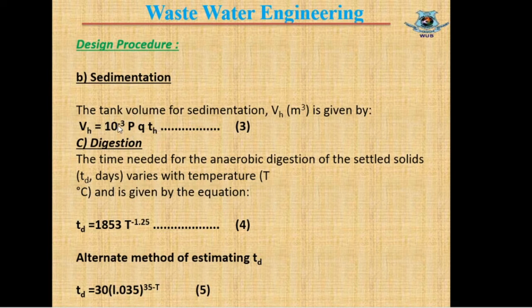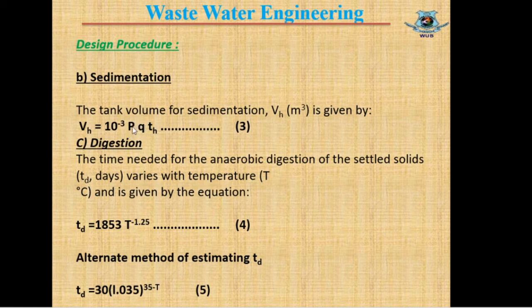The volume of the sedimentation zone VH is calculated as: VH = P × Q × TH × 10⁻³, where P is population, Q is wastewater flow in liters per person per day, and TH is the sedimentation time in days. The factor 10⁻³ converts liters to cubic meters, giving VH in m³.